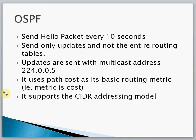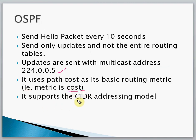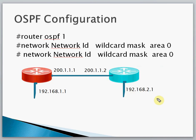Router updates are sent using multicast with the address 224.0.0.5. OSPF uses cost as the basic routing metric and it supports the CIDR addressing model. Now let's see the configuration of OSPF and what commands we use.